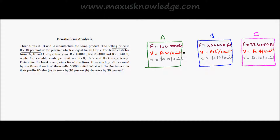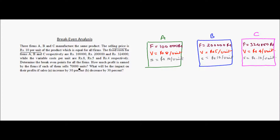The break-even point is the quantity at which the firm will be at a position of no profit, no loss. Next, we have to find out how much profit is earned by the firms if each of them sells 70,000 units. So basically, whatever break-even point we find, that number of units will be where the firms have no profit, no loss. And then if they keep selling more units up to 70,000 units, how much profit will these companies earn? We also have to find out the impact on profits if sales first increase by 30% and second decrease by 30%.